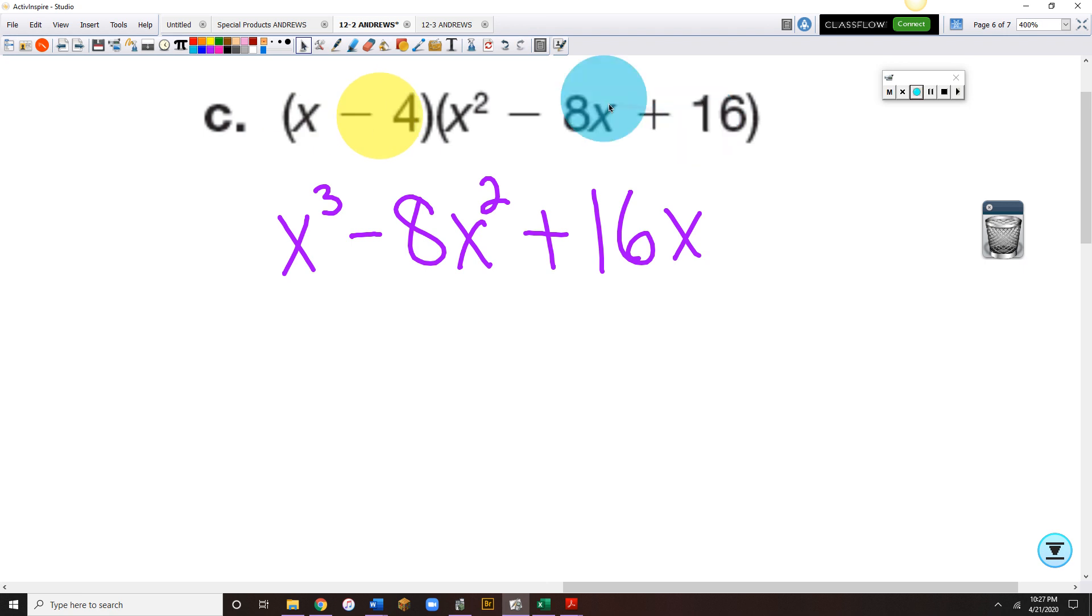Here's where signs are going to go bananas. Minus 4 times x squared is a minus 4x squared. A minus 4 times a minus 8x is a plus 32x. Minus 4 times a plus 16 is a minus 64.